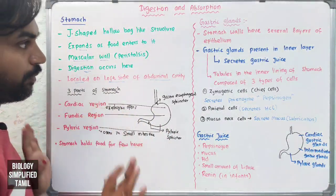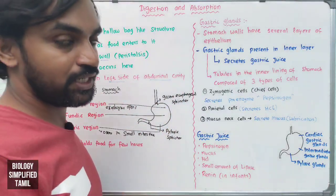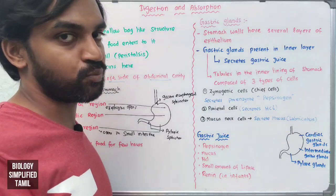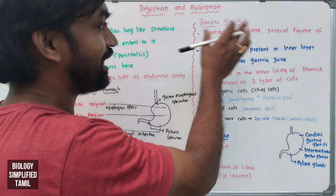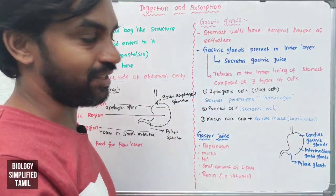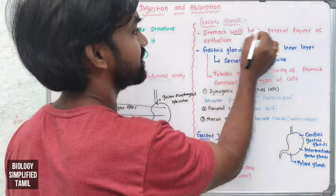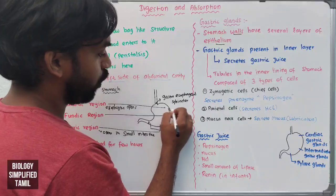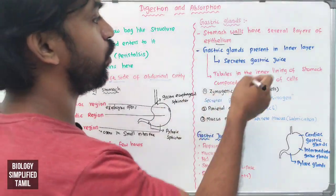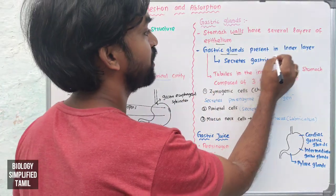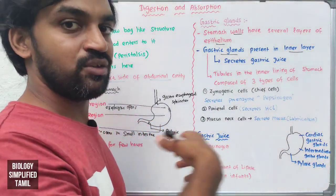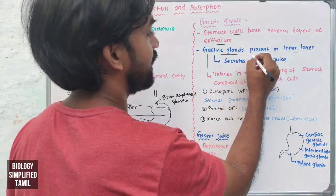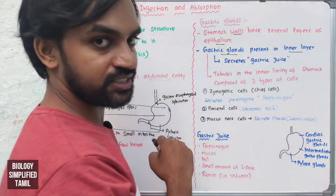The stomach holds food for a few hours. The gastric glands are found in the inner walls of the stomach — the inner layer has several layers of epithelium with gastric glands, which secrete gastric juice.